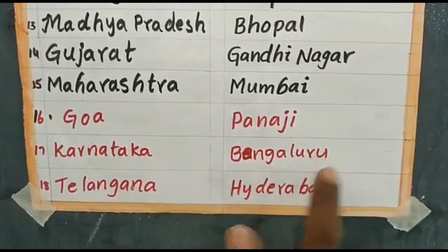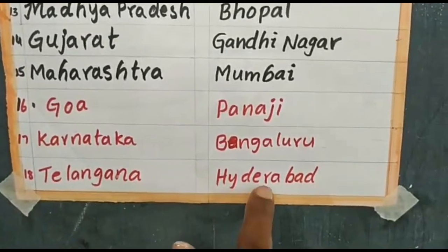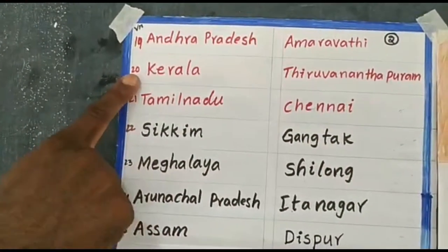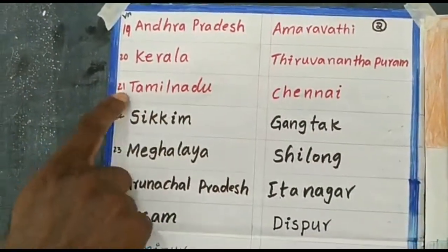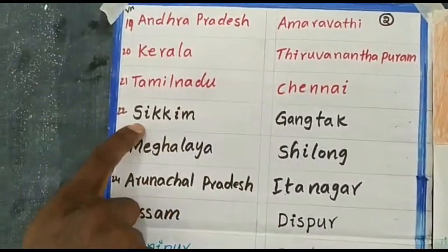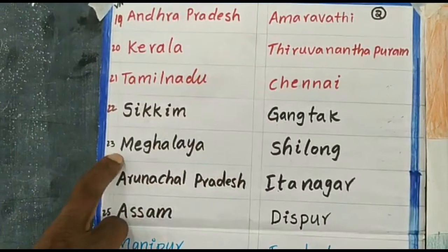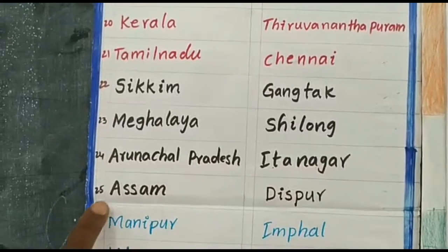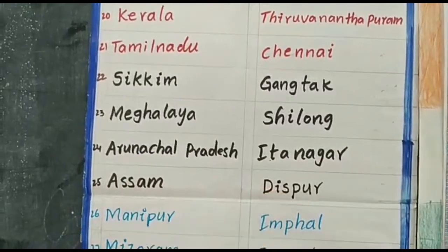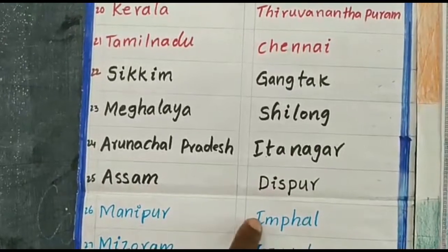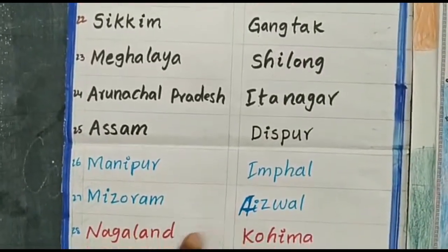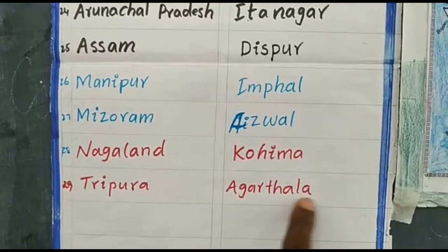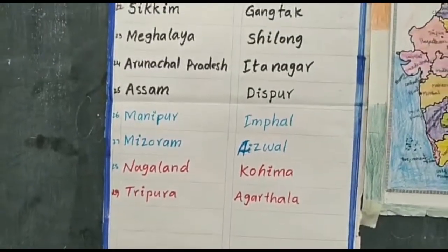Karnataka — capital city Bengaluru. Andhra Pradesh — capital city Amaravati. Kerala — capital city Thiruvananthapuram. Tamil Nadu — capital city Chennai. Sikkim — capital city Gangtok. Meghalaya — capital city Shillong. Arunachal Pradesh — capital city Itanagar. Assam — capital city Dispur. Manipur — capital city Imphal. Mizoram — capital city Aizawl. Nagaland — capital city Kohima. Tripura — capital city Agartala. So I have explained our 29 states and capitals.